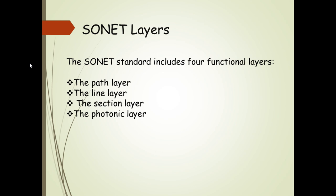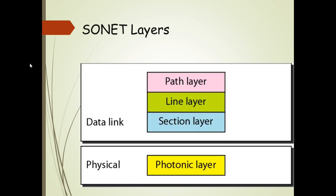Now we discuss the SONET layers. The SONET standard has four functional layers: the path layer, line layer, section layer, and photonic layer. The path, line, and section layers comprise the data link, while the photonic layer operates at the physical link level.